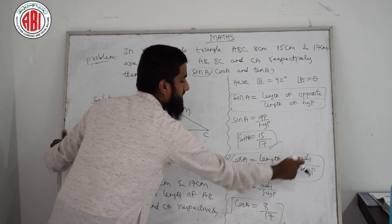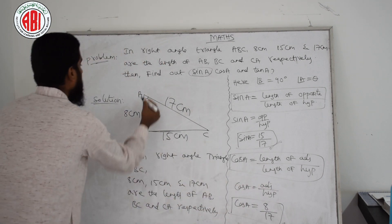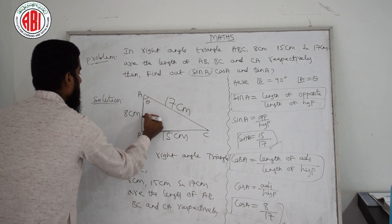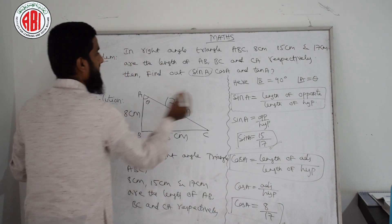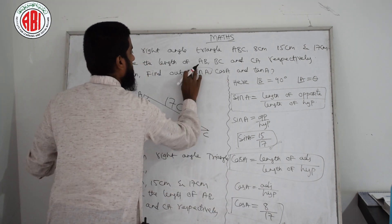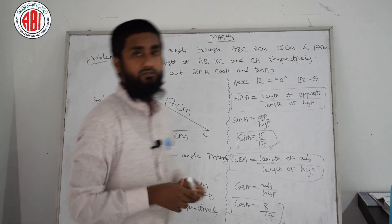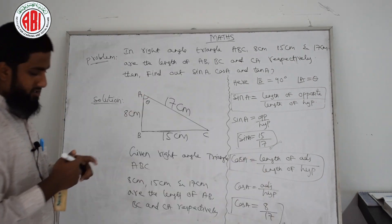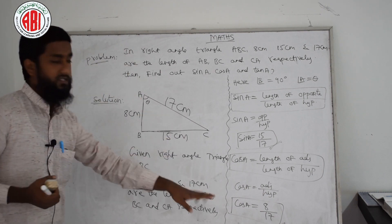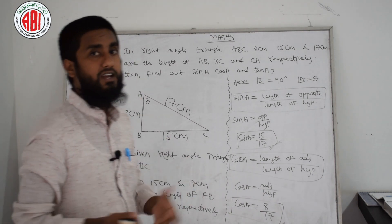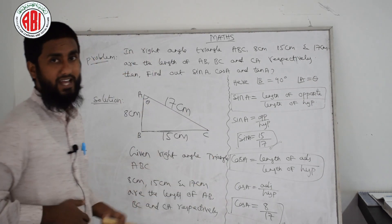Cos A equals length of adjacent by length of hypotenuse. Adjacent side is 8 centimeters, hypotenuse is 17 centimeters, so cos A equals 8 by 17. We have found sin A and cos A. Students, up to here you need to copy it down. Pause and copy — after that I will tell you tan A.